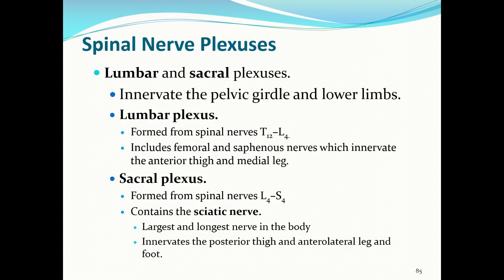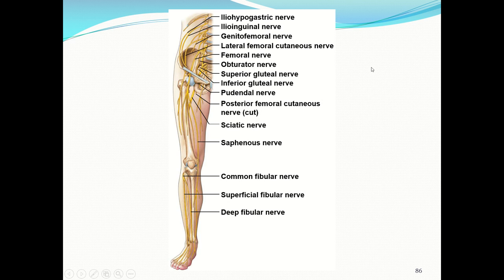The lumbar and sacral plexuses are often discussed together. The lumbar plexus (T12–L4) includes the femoral and saphenous nerves, which innervate the anterior thigh and medial leg. The sacral plexus (L4–S4) contains the sciatic nerve — the largest and longest nerve in the body — which innervates the posterior thigh and anterolateral leg and foot, splitting into the common fibular (peroneal) nerve and tibial nerve.